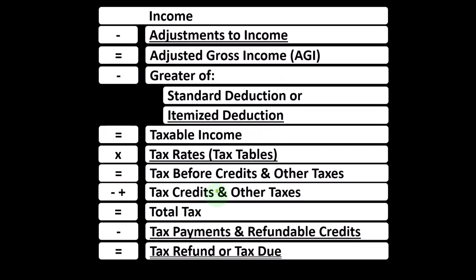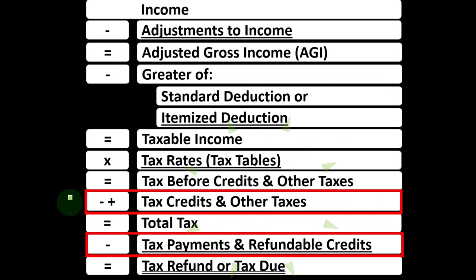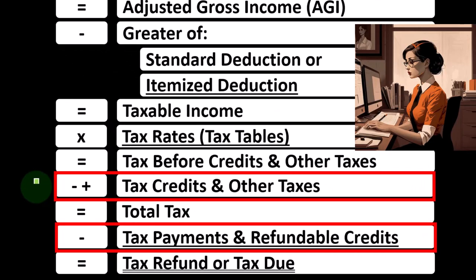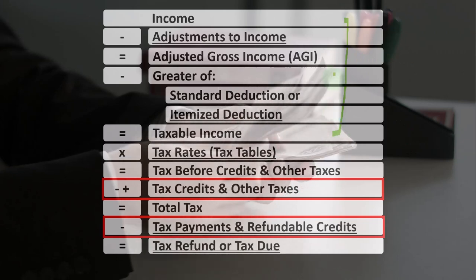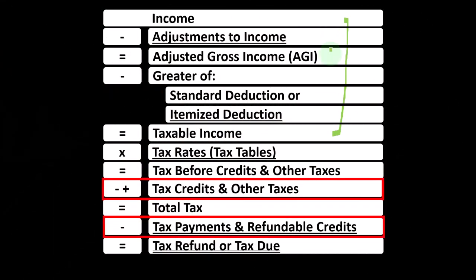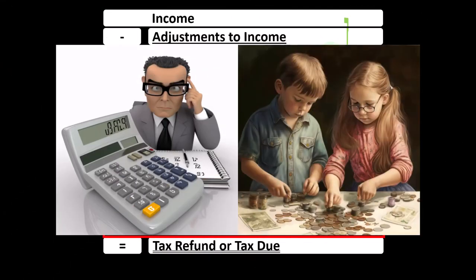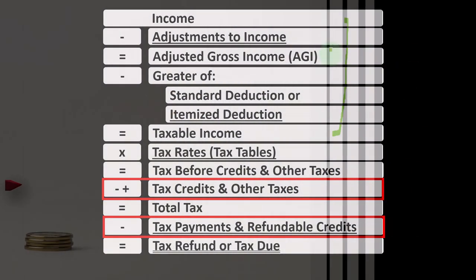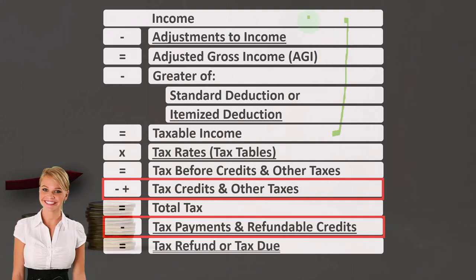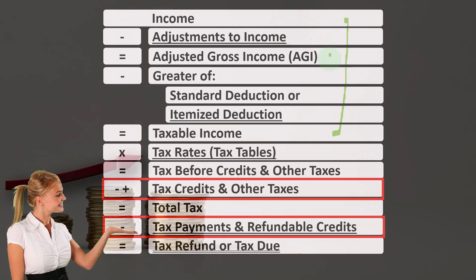Looking at the income tax formula, we're down at the bottom when dealing with the credits. The first half of the income tax formula is in essence an income statement, where we have income and the above-the-line deductions — adjustments to income — to give us the very important subtotal: adjusted gross income, or AGI. AGI is important because oftentimes credits and deductions phase out when income levels go up, and that phase-out is usually based on the AGI number rather than the top-line income.